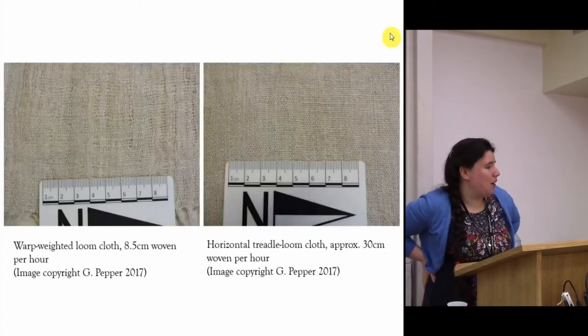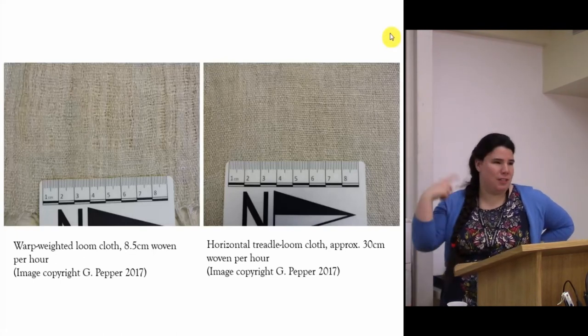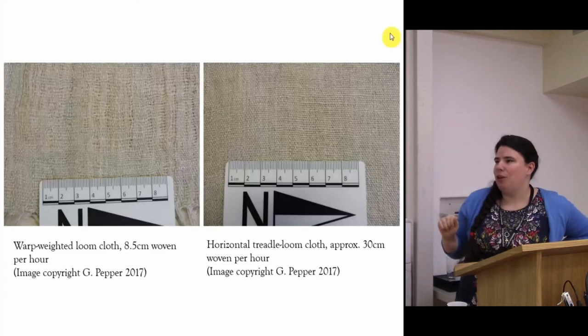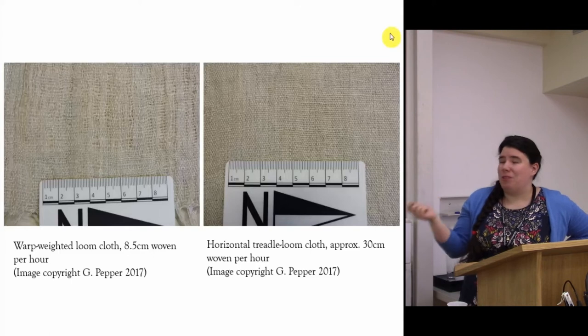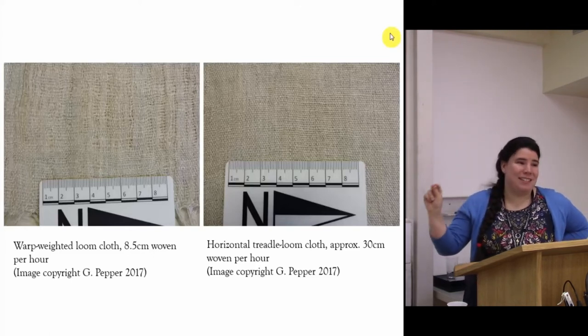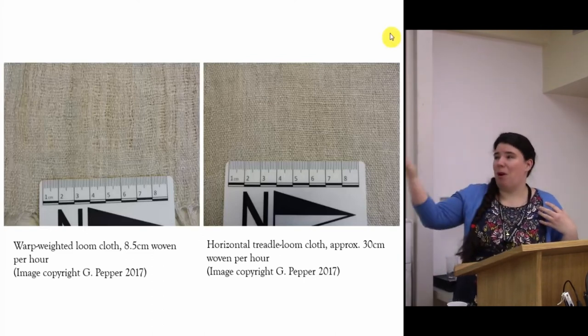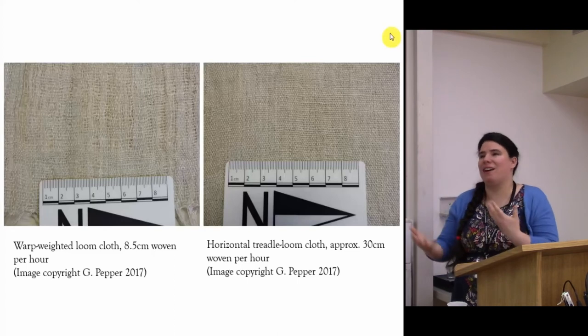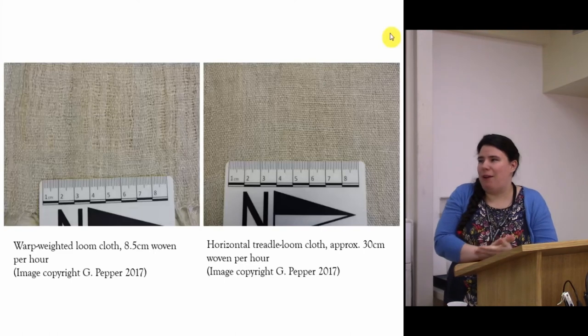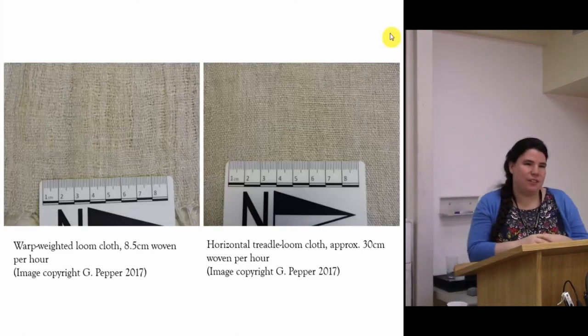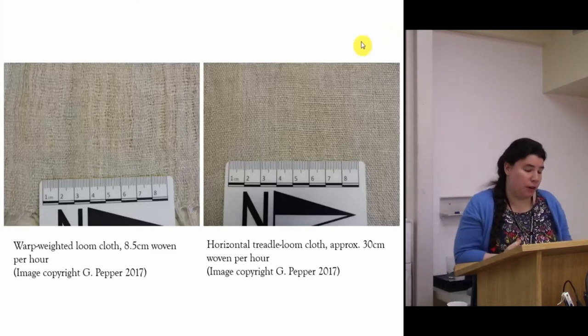This is why it's also really important to understand the technology being used though. The image on the left is once again from the horizontal treadle loom at the rate of eight and a half centimeters per hour. The image on the right was woven on the horizontal treadle loom. You can see the threads are much more closely and evenly spaced. If we were just going by this previous metric, you would say it probably took more time than the warp-weighted loom. However, because it was woven on a more efficient loom, 30 centimeters could be woven in an hour compared to eight and a half. That's a significant difference in how quickly this cloth could be produced and just emphasizes the importance of understanding that context.